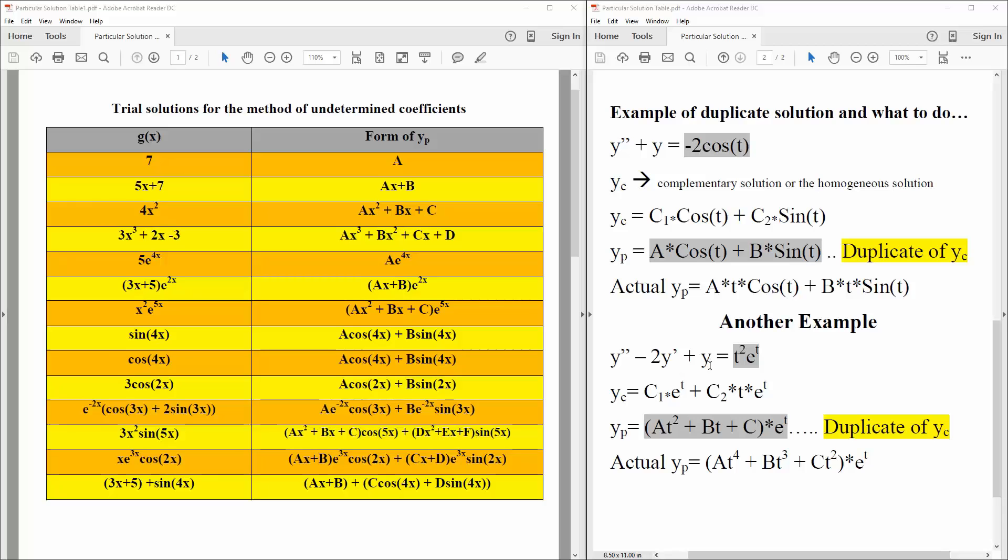Now, another example is this. And our complementary solution would be c1 times e raised to t plus c2 times t e raised to t. Now, if we were just to look at this, our particular solution would be at squared plus bt plus c times e raised to t. And here, once again, we have a duplicate solution because c, e, t, like if you just look at this, that's a duplicate solution of this.